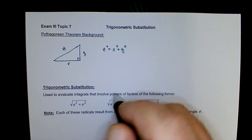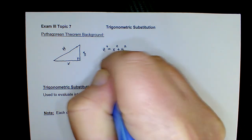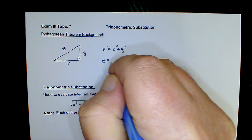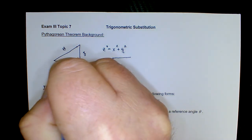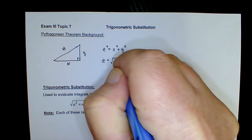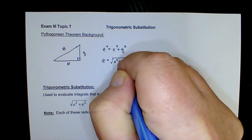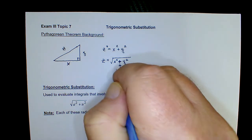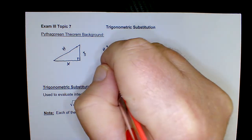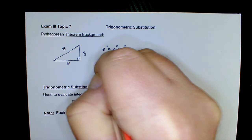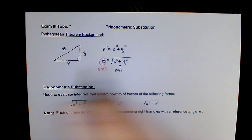The important thing is that if we solve for the hypotenuse z, we take the principal or positive square root of x squared plus y squared, because it's a right triangle and none of the lengths are negative. So if we have a sum of two squares under the radical, then the radical part must be z, which is the hypotenuse, and the legs could be x and y.